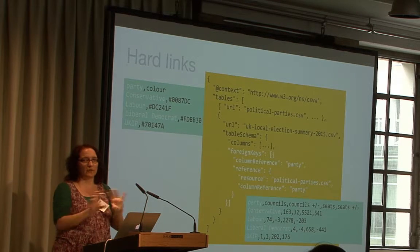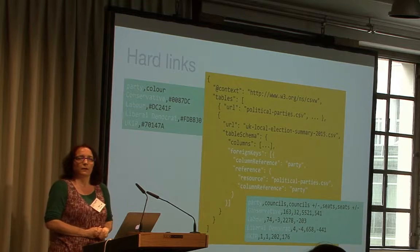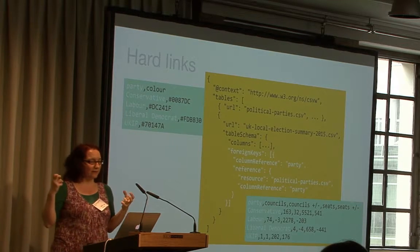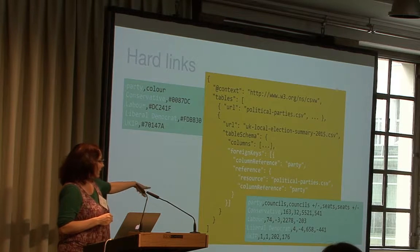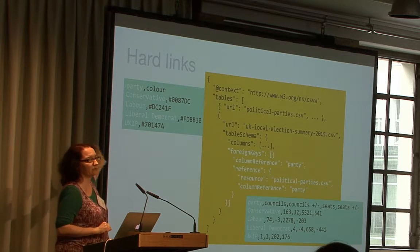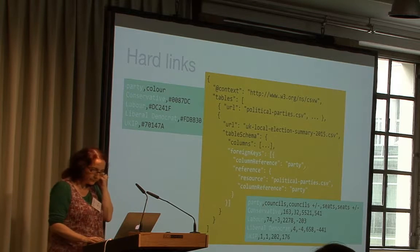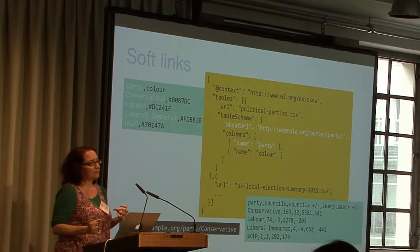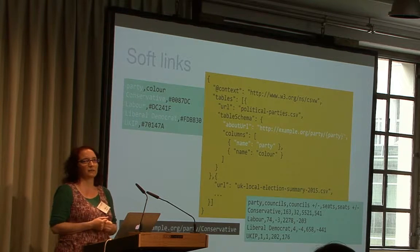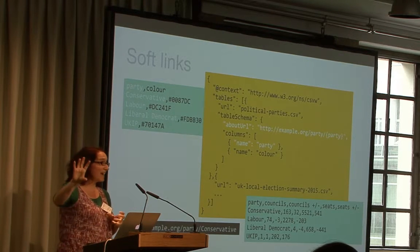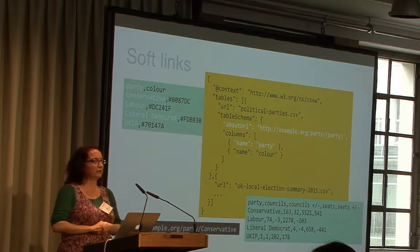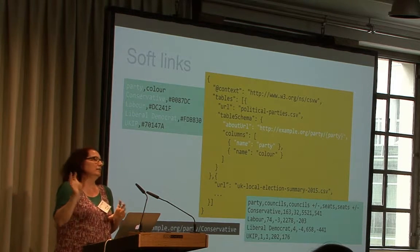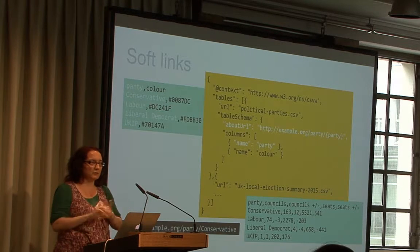And then when describing the election results data, you can use a foreign key to point from the party column in those results to the party column in the reference data about party colors — a hard reference between those two files. When you set up a key relationship like that, from a validator's point of view, any value you find in the referencing file has to exist in the referenced file, and if it doesn't it throws an error. But there's another way of doing it — you can also use soft links. This is important when designing for the web: if you're relying on somebody else's data, they might change it, some values might disappear.